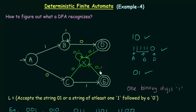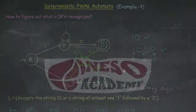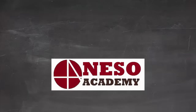In this example we have studied how to figure out what a DFA recognizes, and we have also figured out how to complete a DFA using a dead state. I hope this example was clear. Thank you.